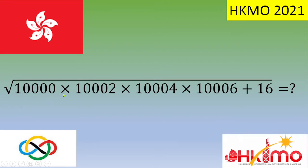So the expression under the square root is 10,000 × 10,002 × 10,004 × 10,006 + 16. If you want to give it a try, please pause the video; otherwise, let's see the solution.